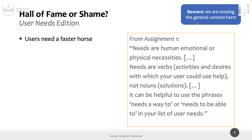It's a noun — it's a solution, a specific object. From this sentence you cannot come up with alternative solutions because it is the solution itself. Slightly more difficult: 'user needs to have financial help.' Is this a need — a good need, a bad need, or not a need at all? It's written like a need — 'user needs' plus a verb — so think about whether it's more a need or not a need.